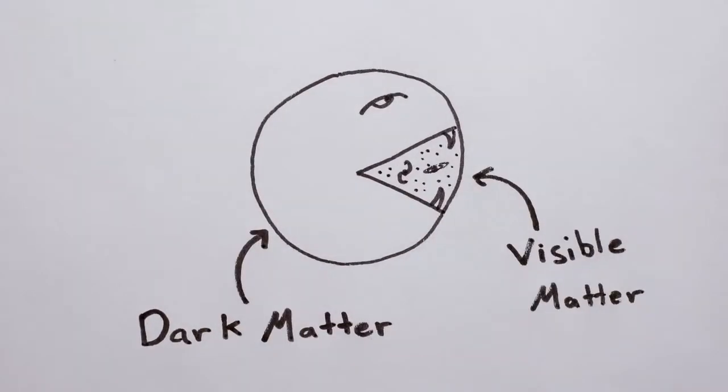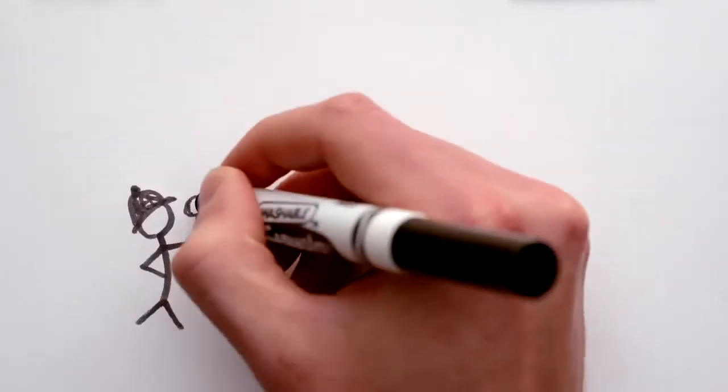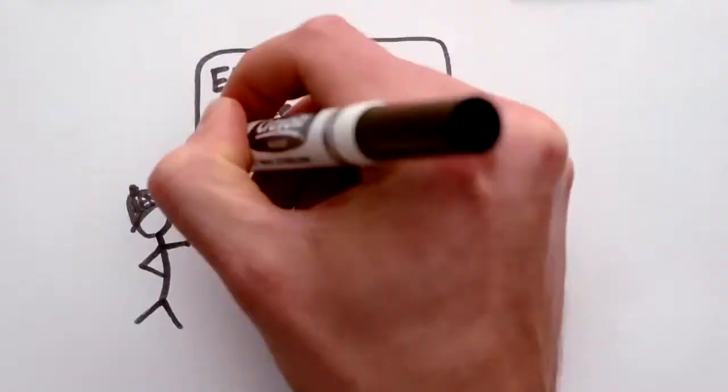It's four times more common in the universe than visible matter, yet we've never seen or directly observed it. So how do we know it's there?